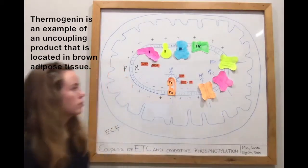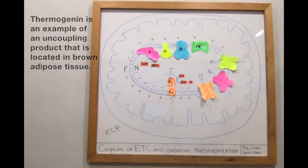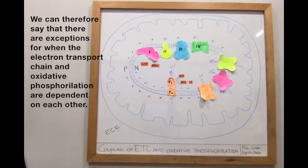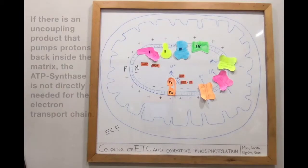Thermogenin is an example of an uncoupling product that is located in the brown adipose tissue. When thermogenin is active, it will pump protons from the intermembrane space to the matrix, and by this process it will generate heat. We can therefore say that there are exceptions for when the electron transport chain and oxidative phosphorylation are dependent on each other.